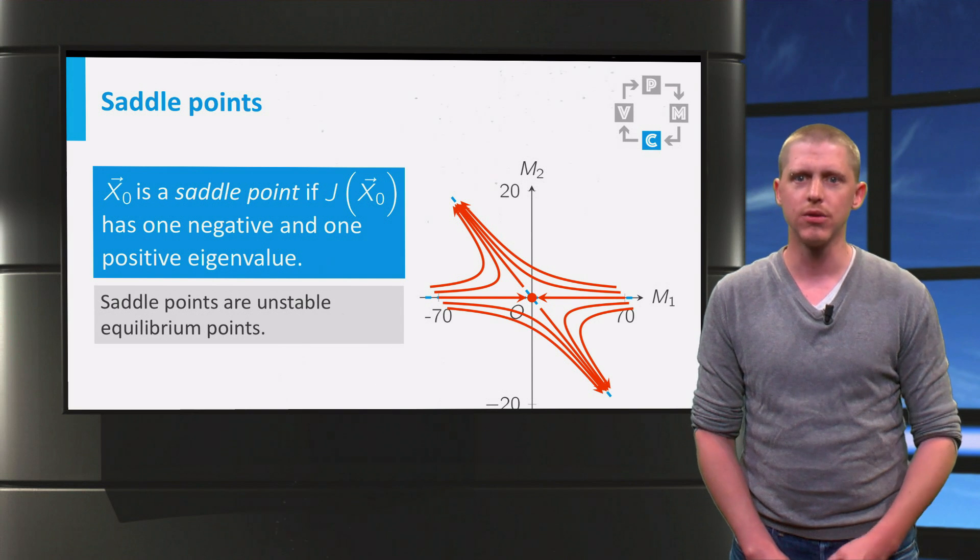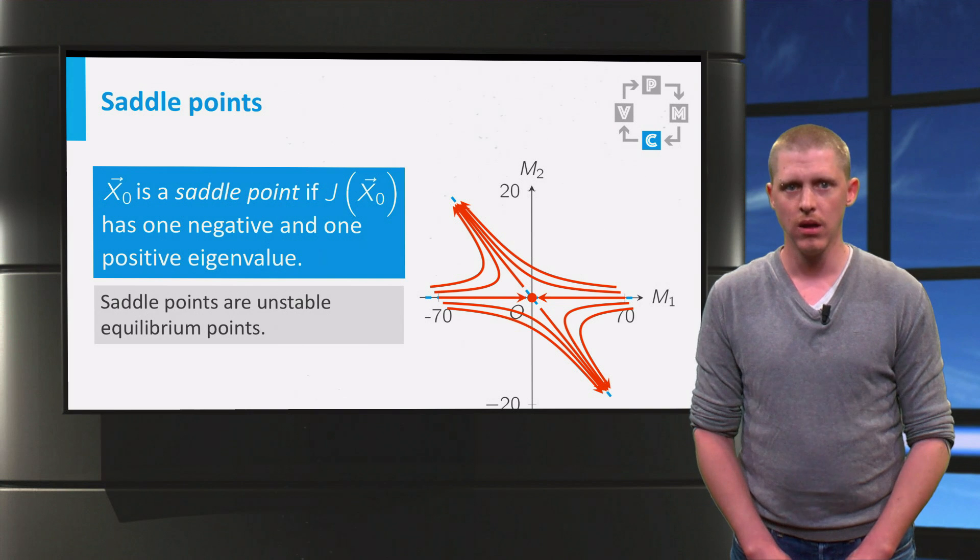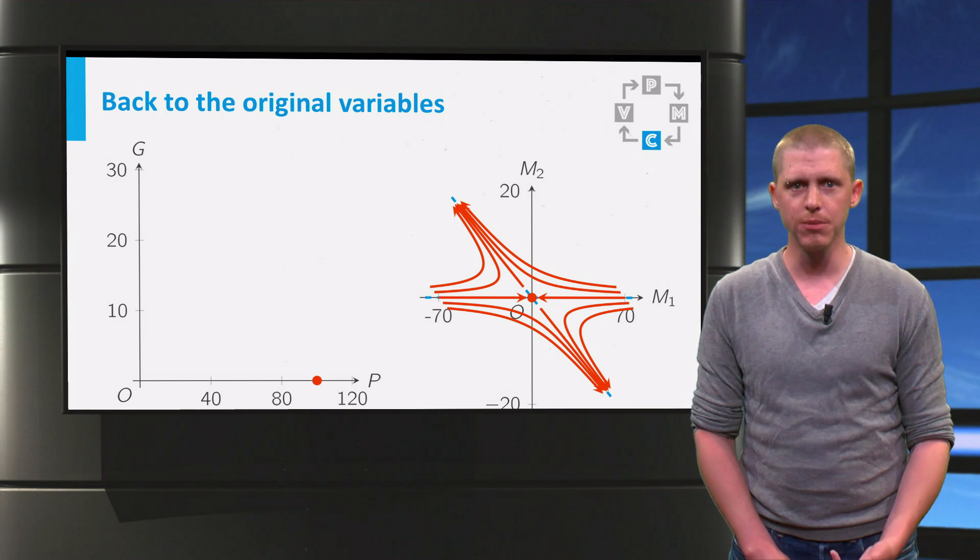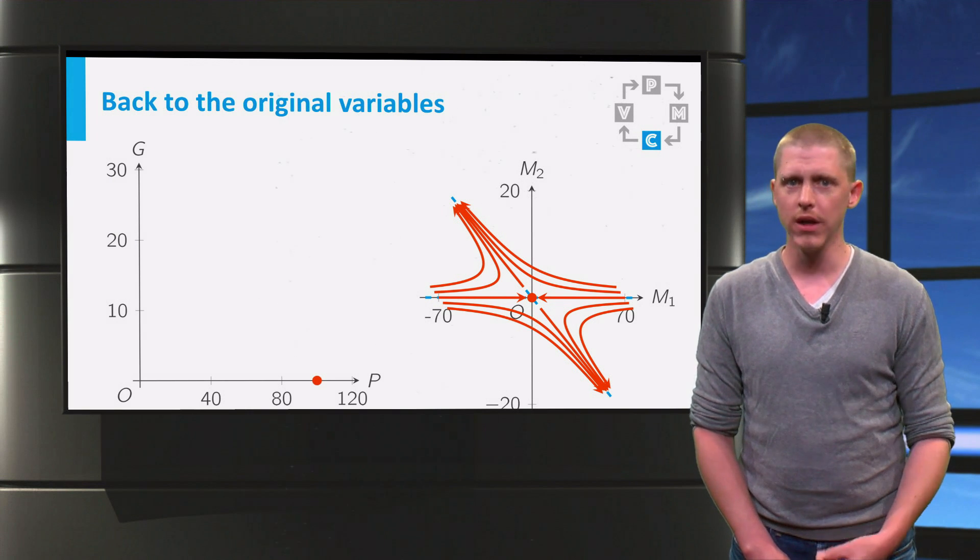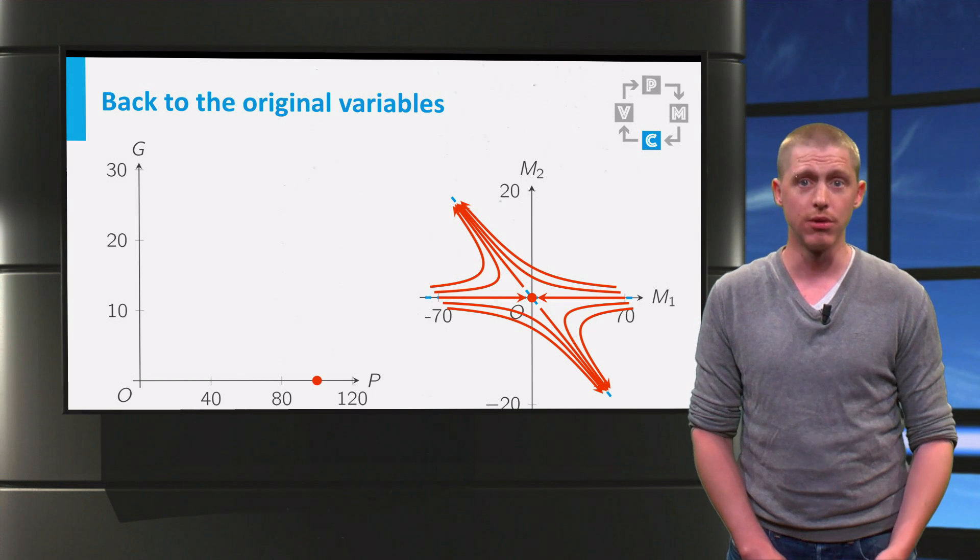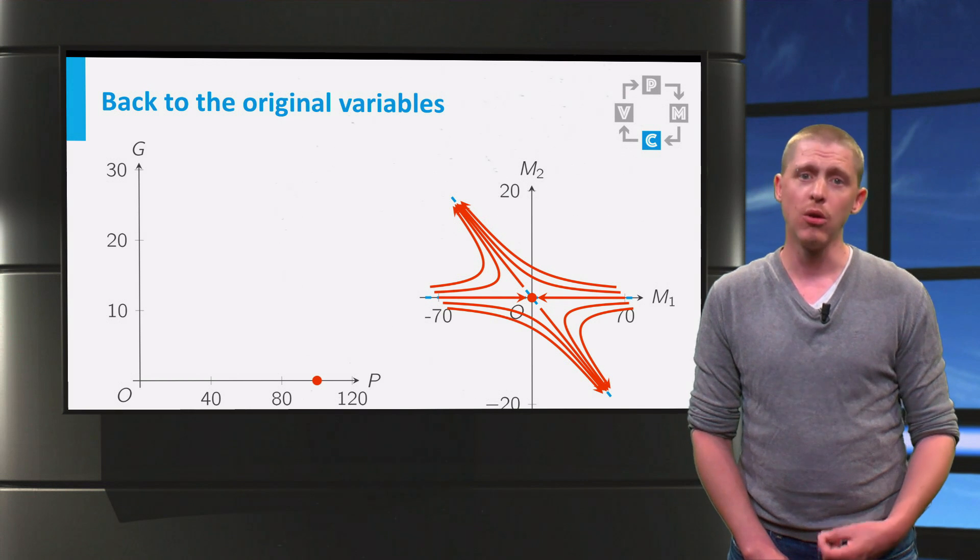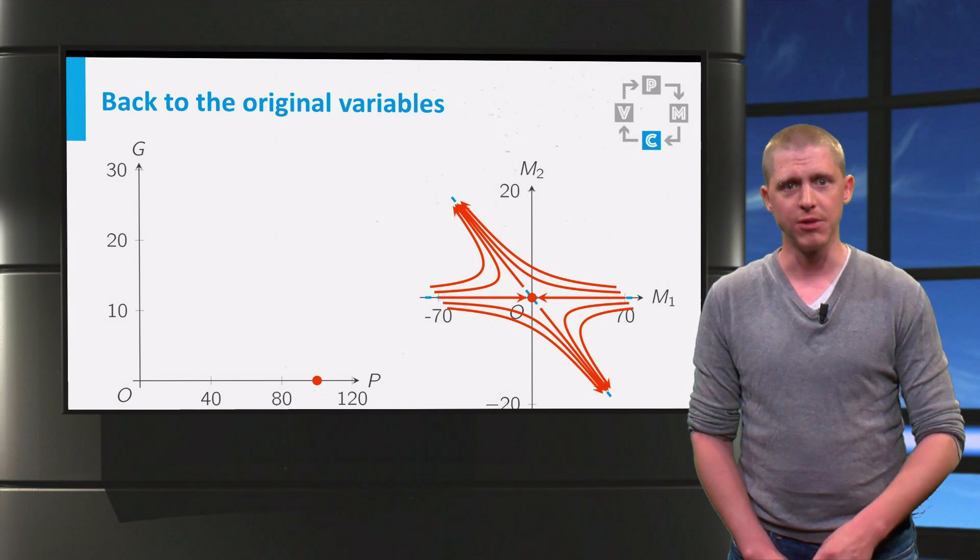Now let us go back to the variables p and g of our original system. On the left you can see the phase plane for p and g. The vector m is the vector with p minus 100 and g minus 0. So the origin in the phase plane of m is the point 100, 0 in the phase plane for p and g.